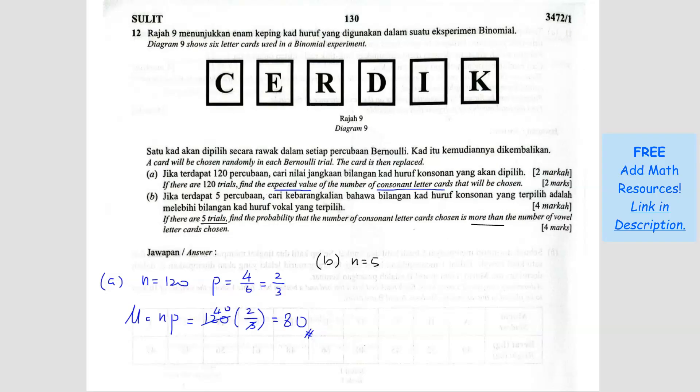Find the probability that the number of consonant letters chosen is more than the number of vowels. So you got 5 trials. If consonant is more than vowels, means out of the 5, at least 3 is consonant, right?